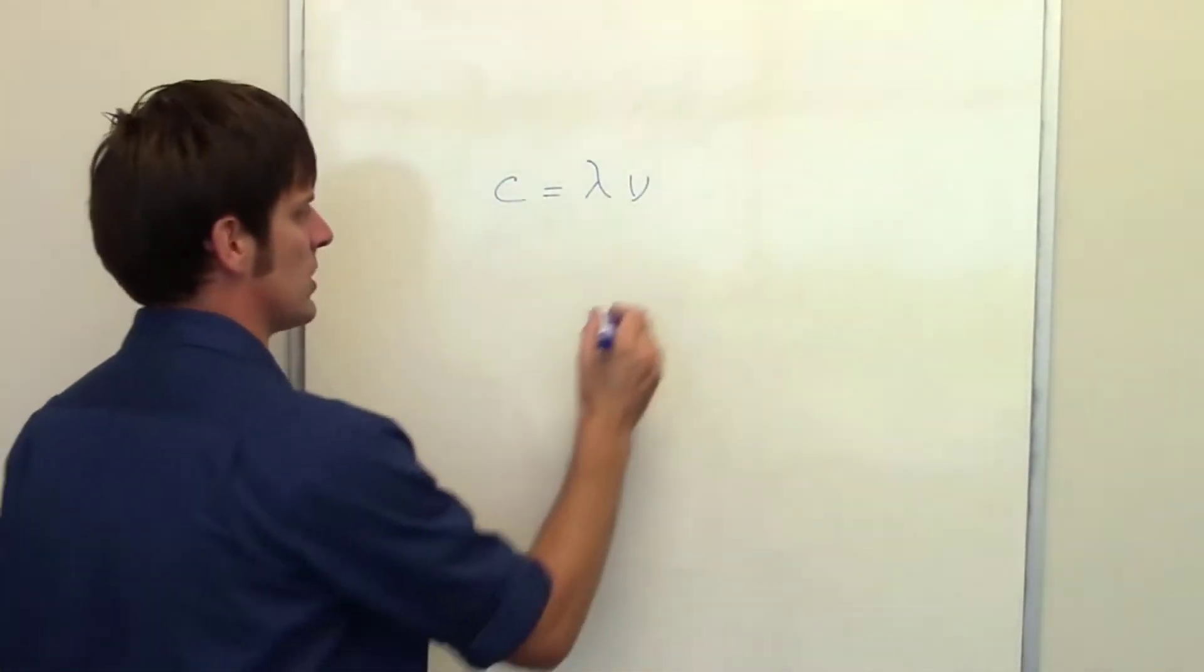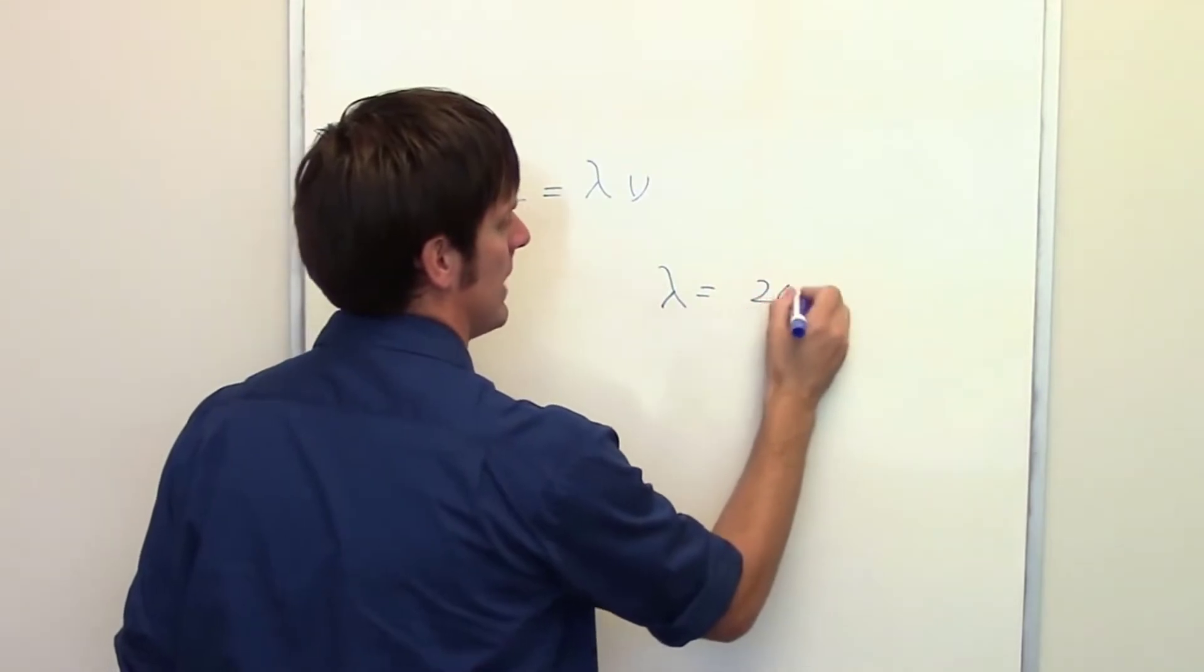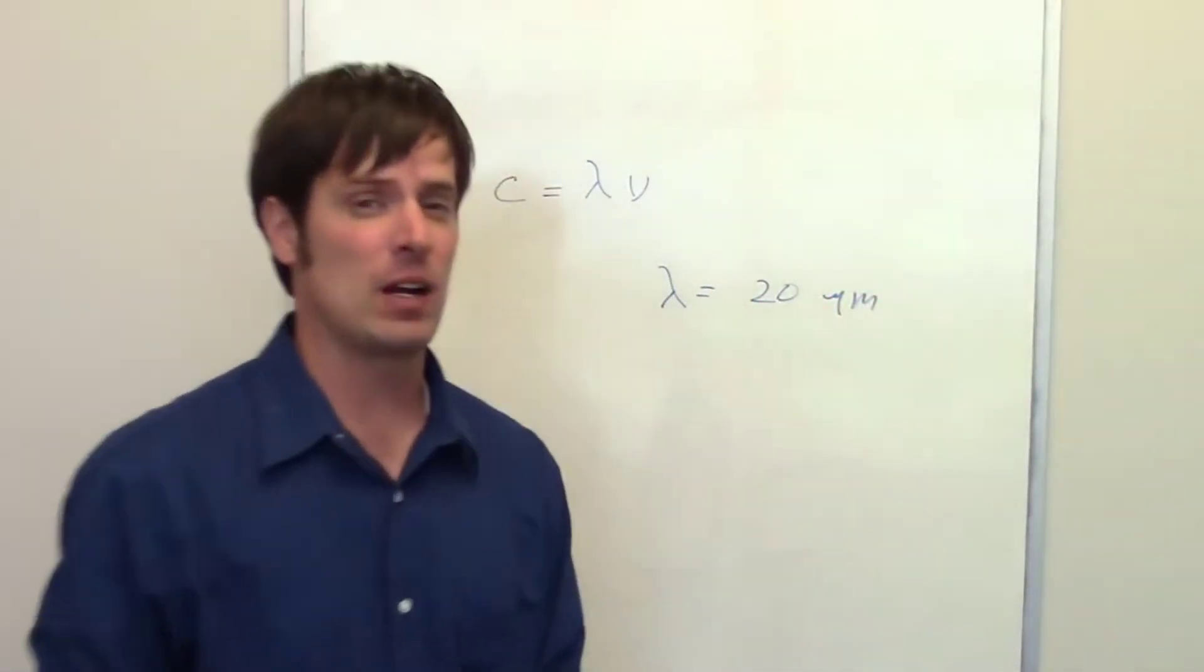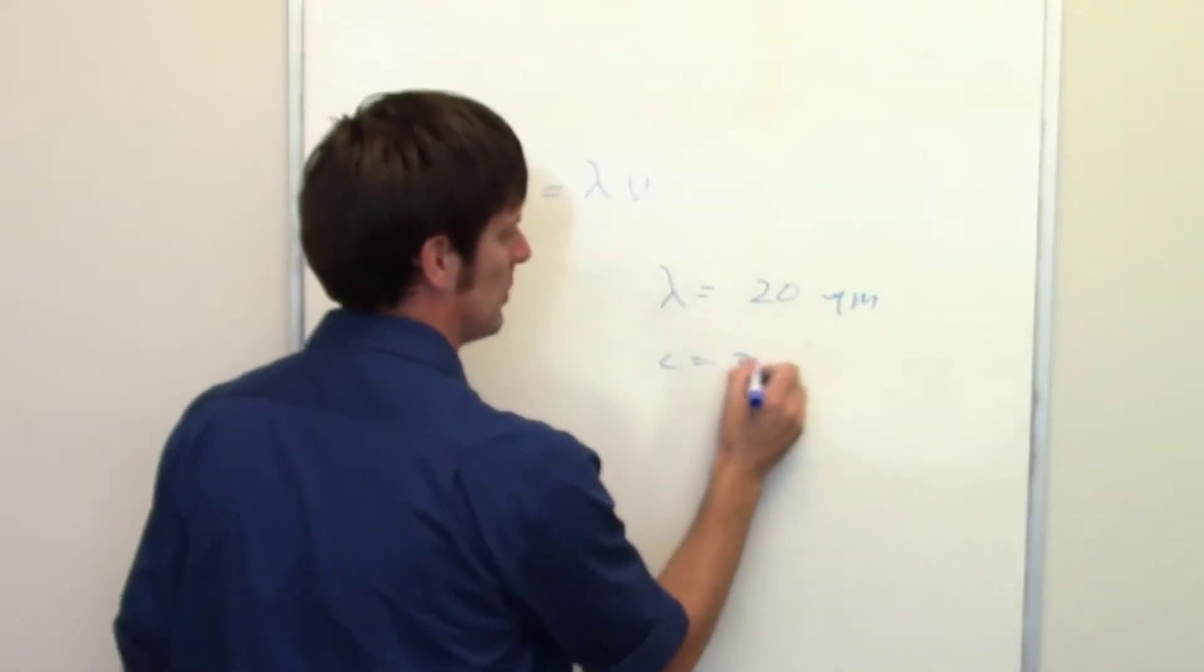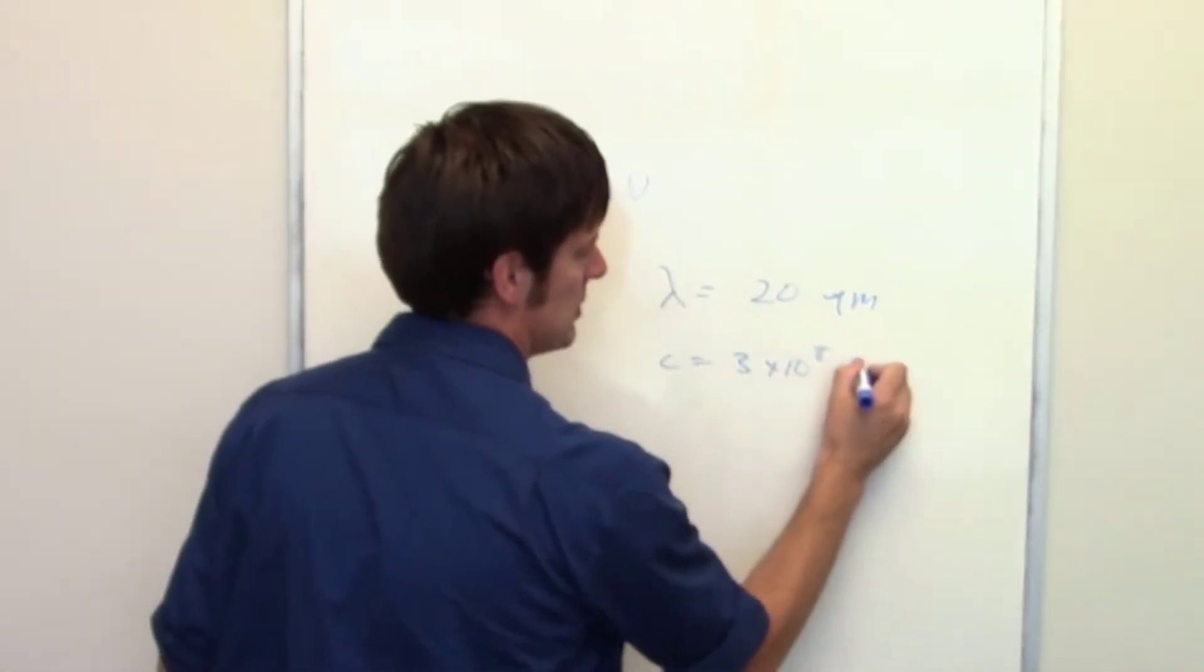We're given that our wavelength is equal to 20 micrometers. Now, we know the speed of light to be equal to 3 times 10 to the eighth meters per second.